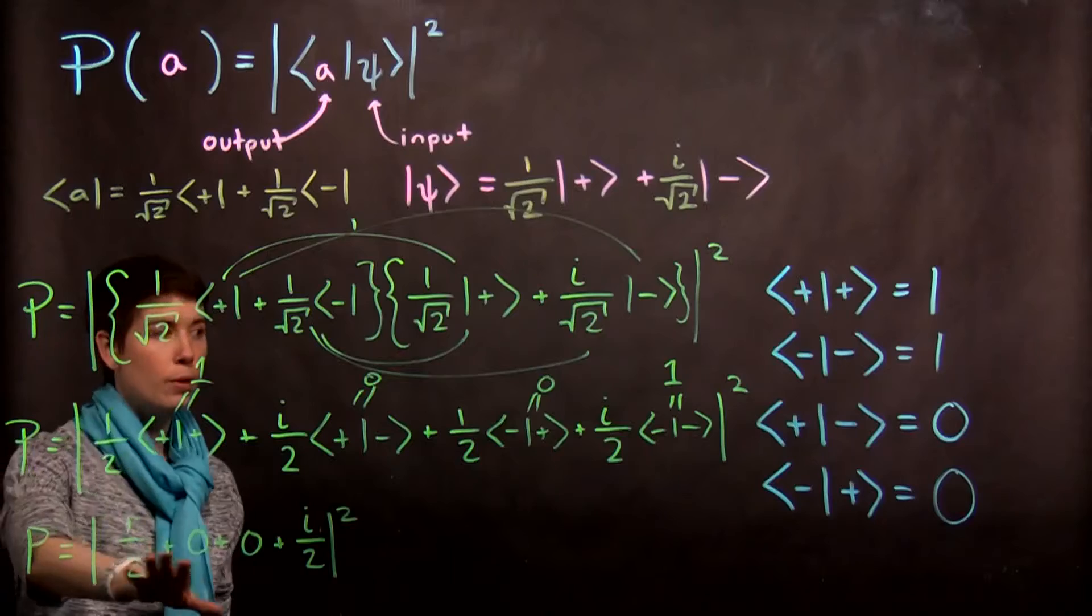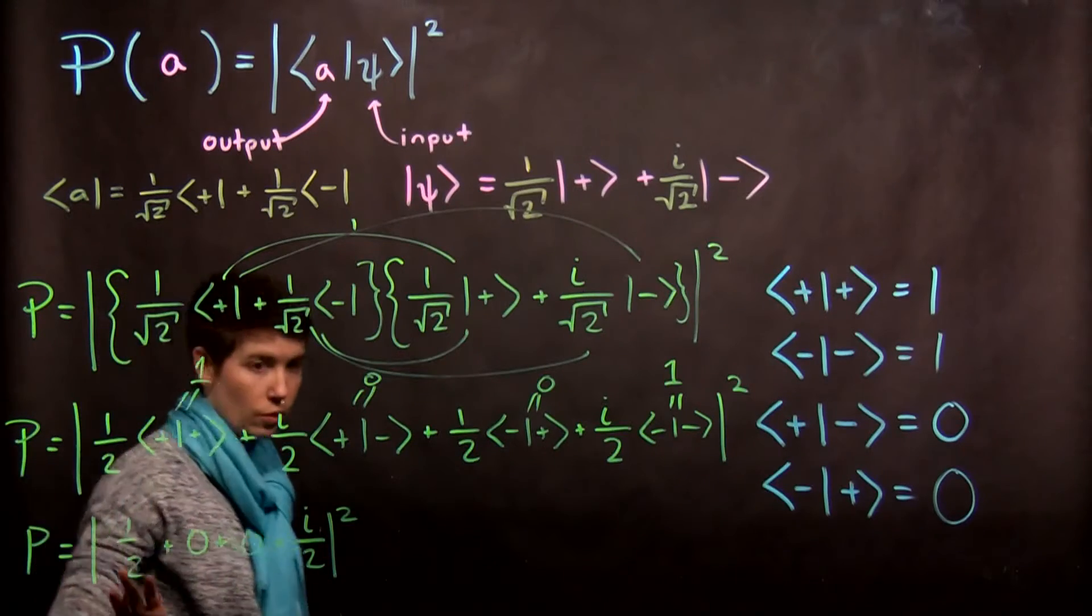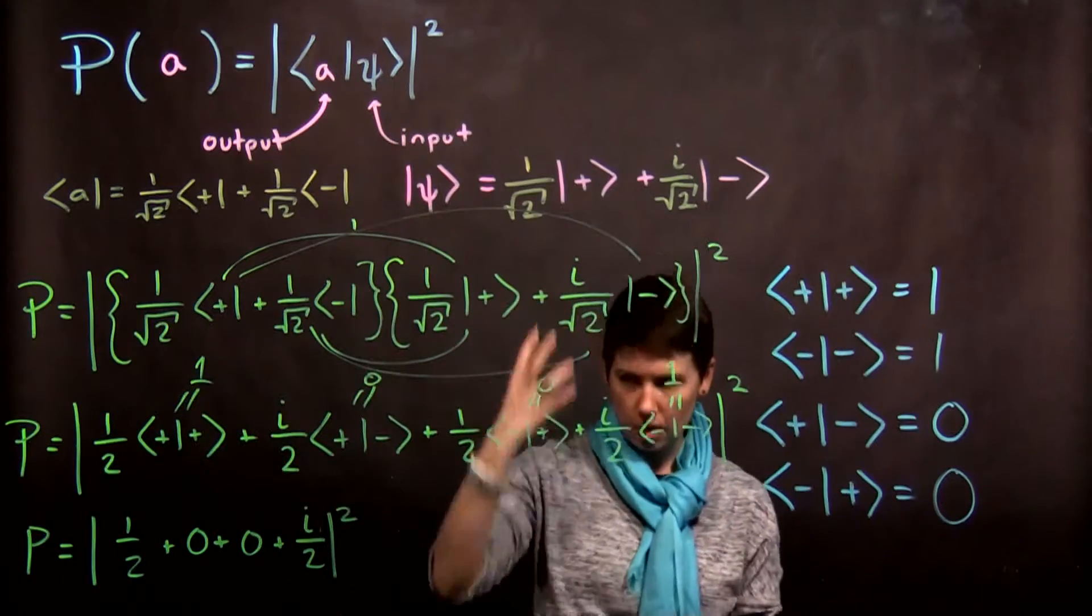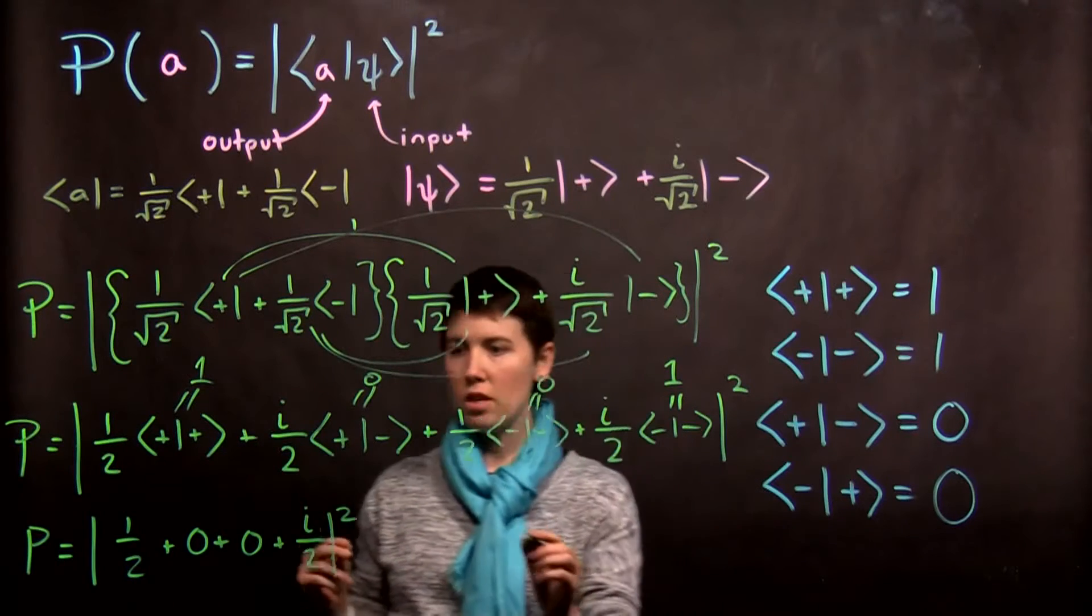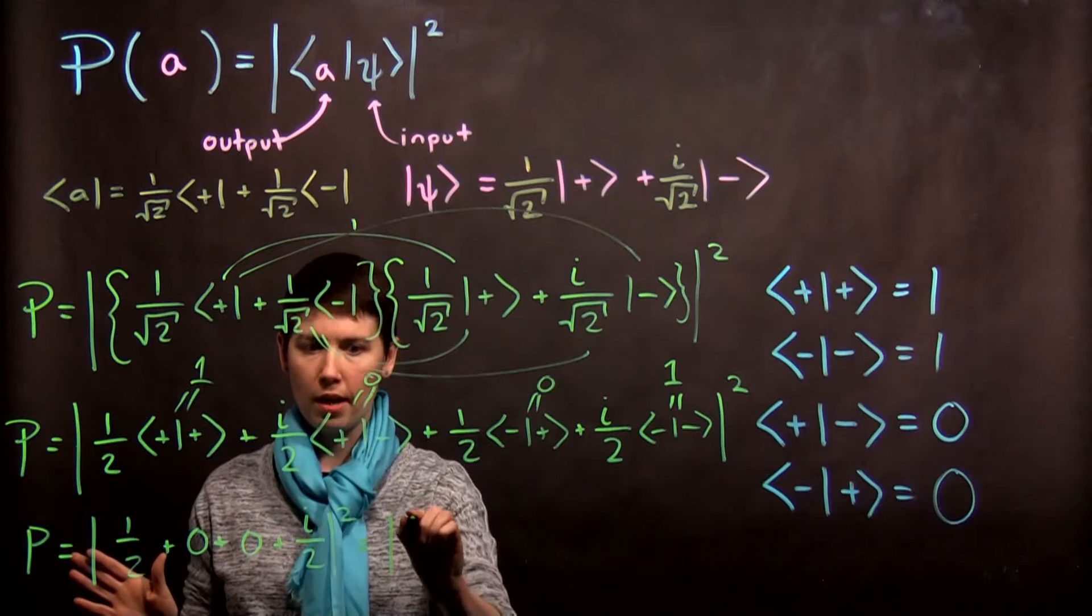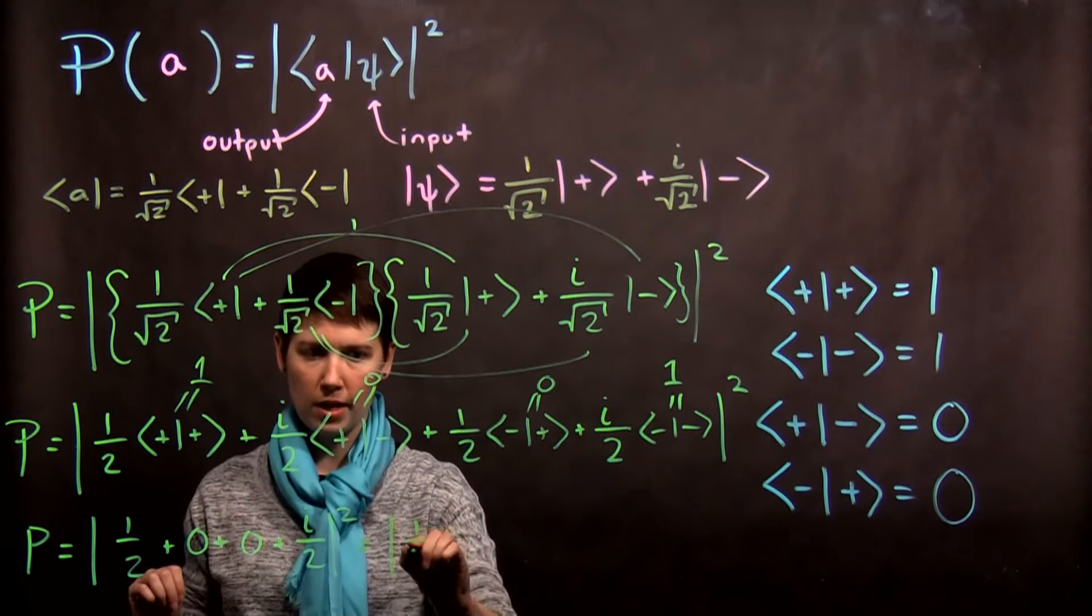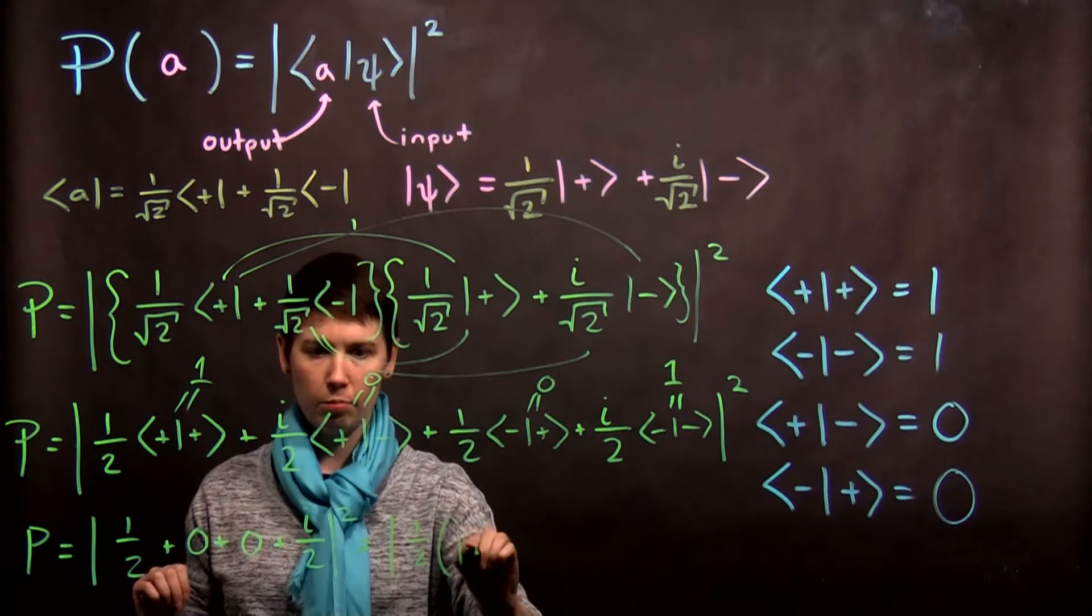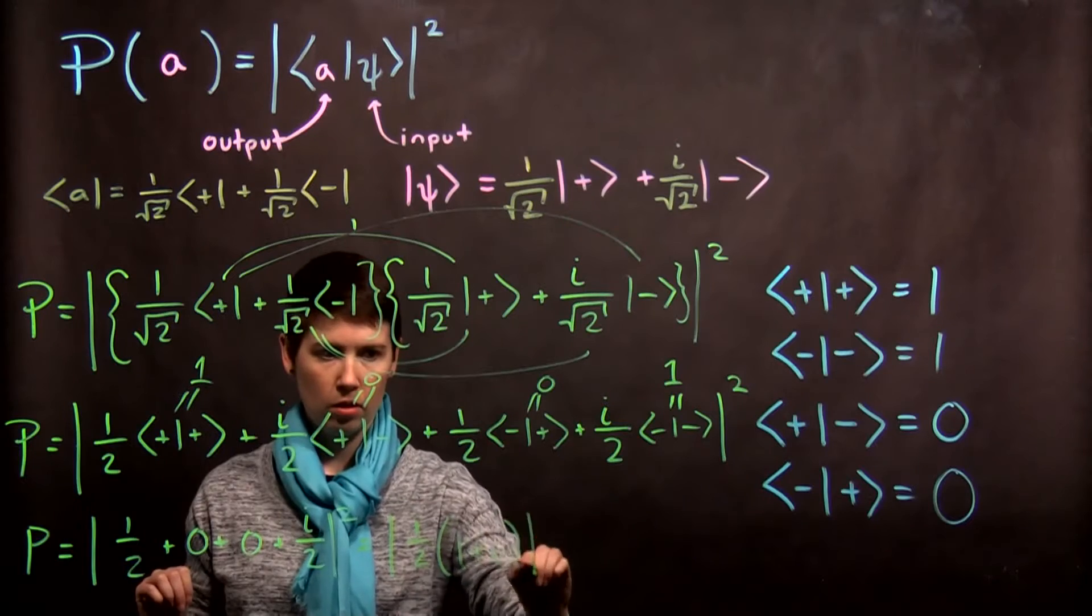Now this is where we have to remember that this isn't just magnitude. This is that complex conjugate magnitude. So let me just write that out a little more simply. We have, and I'll actually factor this, one plus i squared.